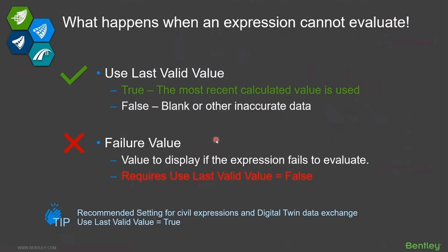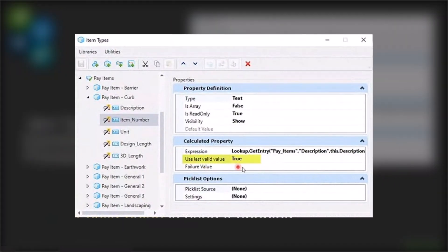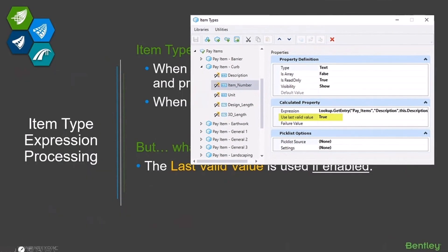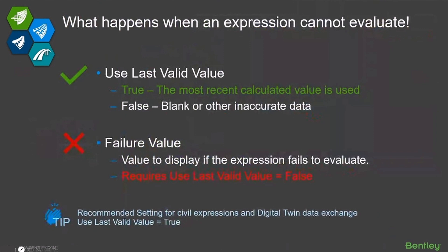You would rather see at least the best data you had, so it's very important that in your production environment you run with last valid value set to true. There is another option called failure value, and you can put a value in there like 'error' or some number to indicate it failed. The big thing to understand is you cannot use last valid value true and failure value at the same time — they're mutually exclusive. If you add a failure value, it will automatically set last valid value to false.